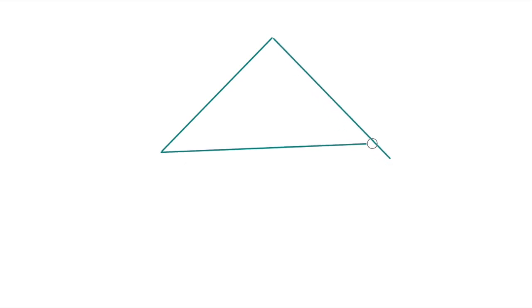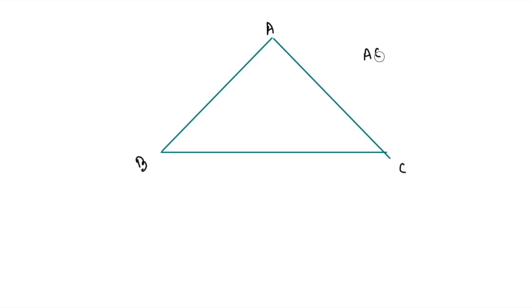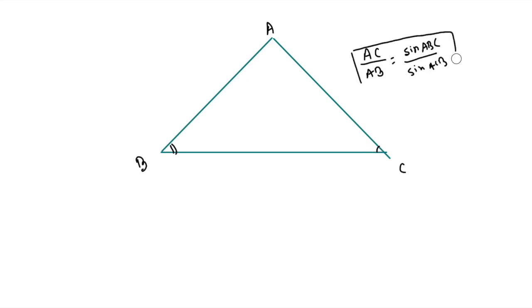If you have a triangle, name the vertices A, B, and C. By the sine rule, AC upon AB equals sine of angle ABC upon sine of angle ACB. This is called the sine formula.